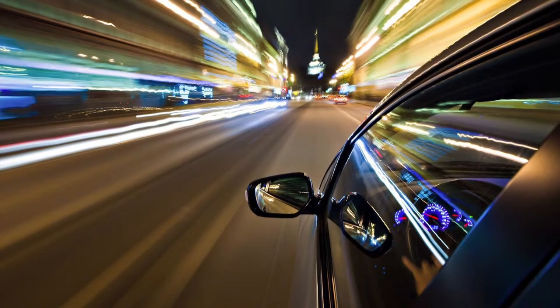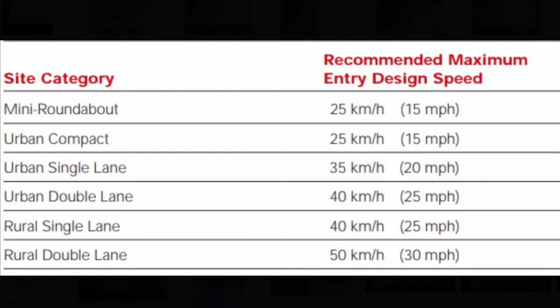Here is the table provided by the Federal Highway Administration that displays a recommended maximum entry design speed based on various types of intersection site categories. You can take note of the location, whether it be a rural area or a congested urban area. You can also note that the size of the curve radius and the number of lanes contribute to the design speed.